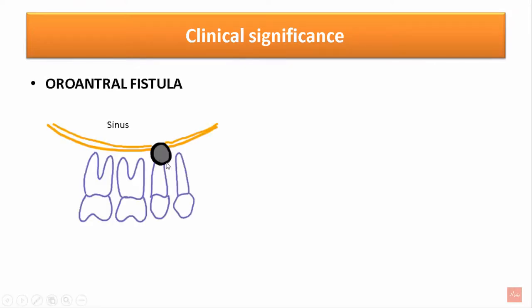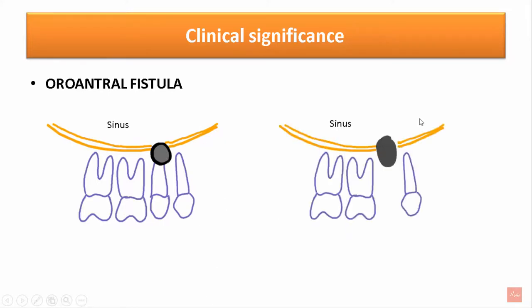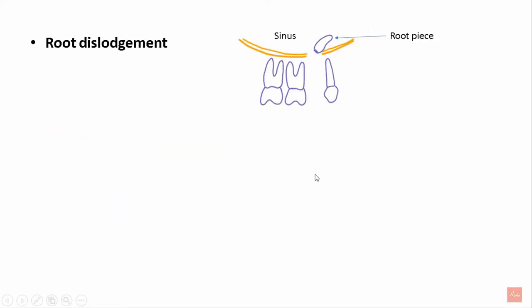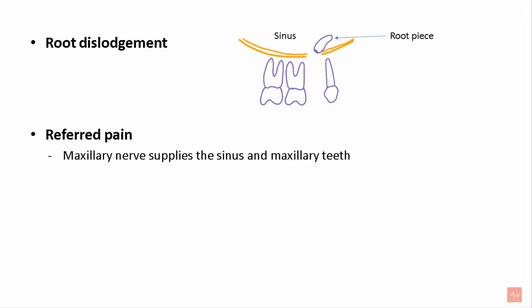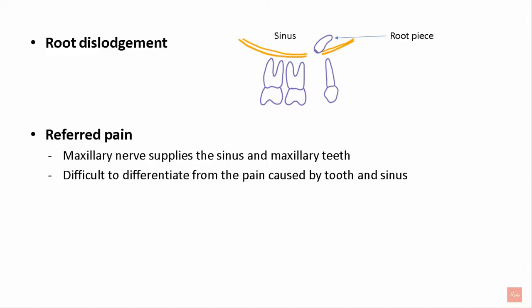The maxillary sinus has numerous clinical significances. Formation of an oroantral fistula can occur in the presence of periapical infection around the region of the maxillary sinus; extraction of these teeth can lead to communication between the sinus and the oral cavity. In an attempt to extract a maxillary tooth, a root piece can get dislodged into the maxillary sinus. There can also be referred pain, as the maxillary nerve supplies both the sinus and the maxillary teeth, making it difficult to differentiate the source of pain. Proper diagnosis helps in treatment.